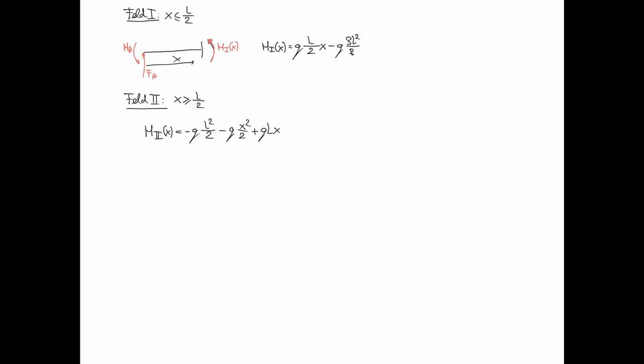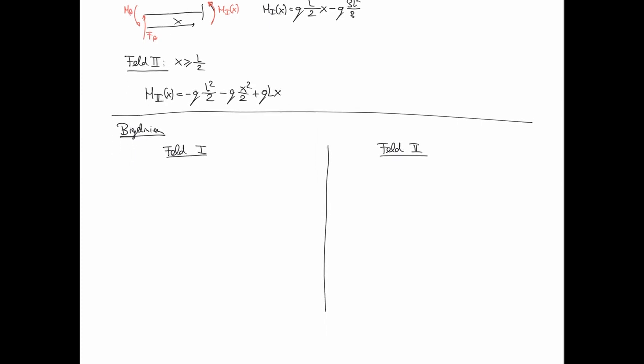Und das heißt, wir kriegen für die Biegelinien einmal für, vielleicht machen wir das gleich so, Feld 1 links und Feld 2 rechts. Im linken kriegen wir EIW1 Strich Strich von x fürs Biegemoment, ist das negative Biegemoment im Trägerteil 1, ist also minus Q L halbe x plus Q 3 L Quadrat Achtel. Zwei Mal integrieren. Minus Q L Viertel x Quadrat plus Q 3 L Quadrat Achtel x plus erste Konstante C1.